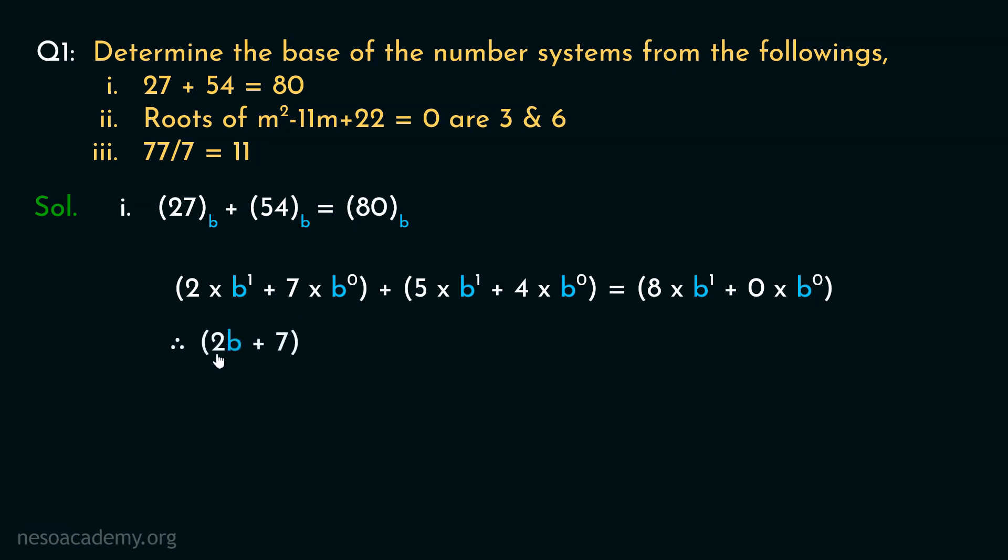Now this will result in 2B plus 7 because 2 into B raised to the power 1 is 2B and 7 into B raised to the power 0 is actually 7 times 1 which is 7. Similarly, this one will be 5B plus 4. This will be 8B because 0 into B raised to the power 0 is 0. Now, 2B plus 5B will give us 7B and 4 plus 7 is 11. So we can state 7B plus 11 is 8B. Now subtracting 7B from both the sides, we obtain the value of B is 11.